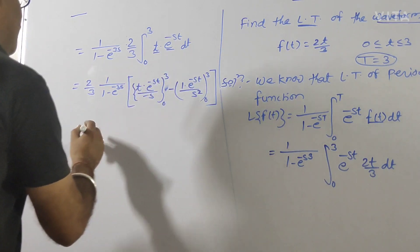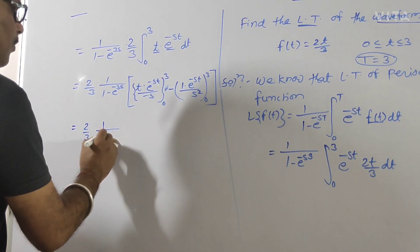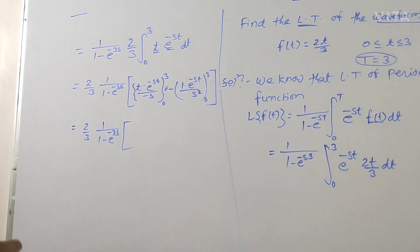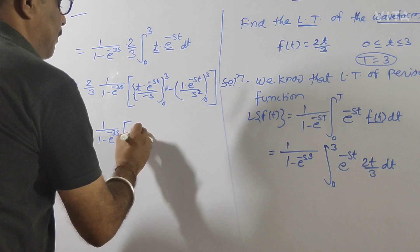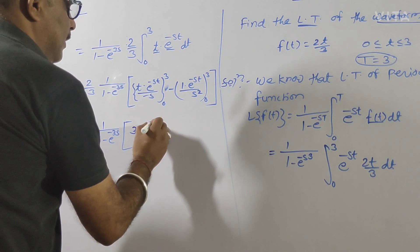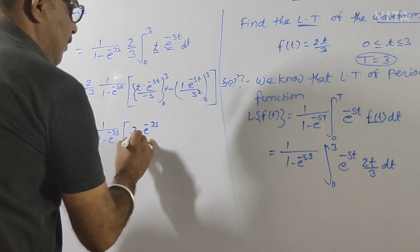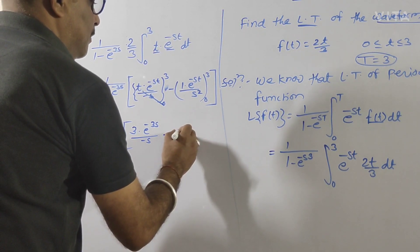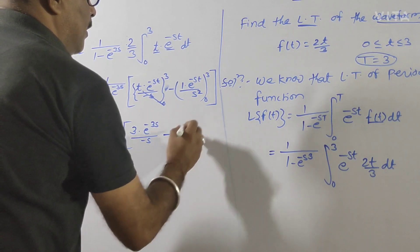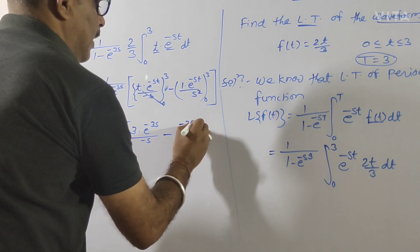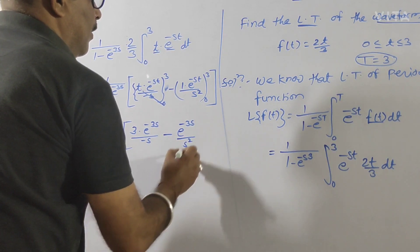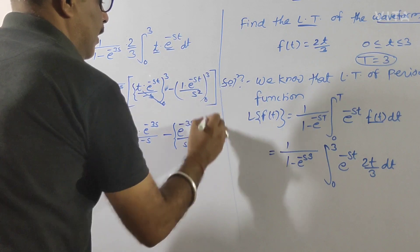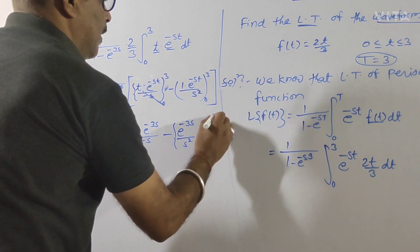अब simply इसकी value put कर दीजिए. यह हो जाएगा: 2/3 × 1/(1 - e^(-3s)). यहाँ t = 3 रखेंगे: e^(-3s)/(−s). और 0 रखेंगे तो पूरा terms 0 हो जाएगा. फिर e^(-3s)/s² और 0 रखेंगे तो यह 1 हो जाएगा — 1/s². यह आपको मिलेगा.